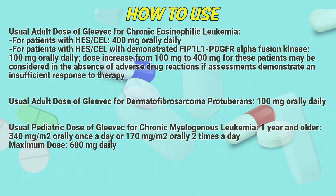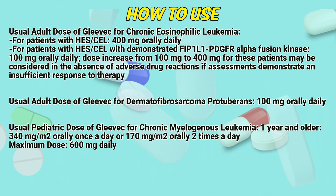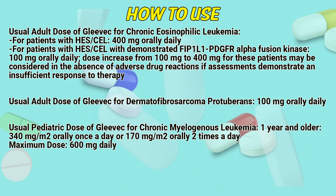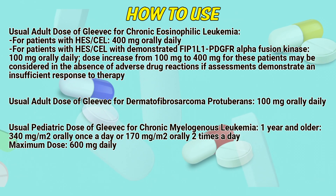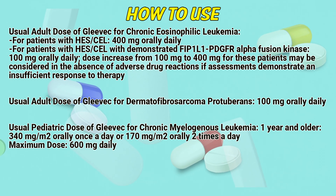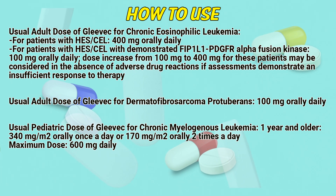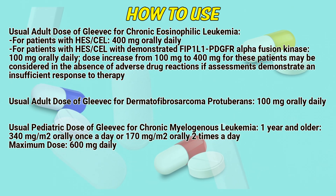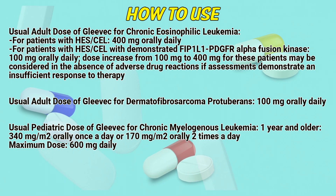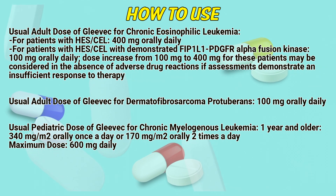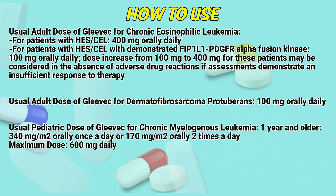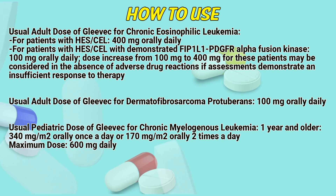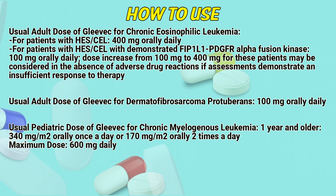Usual adult dose of Glivik for chronic eosinophilic leukemia: For patients with HES — 400mg orally daily. For patients with HES with demonstrated alpha fusion kinase — 100mg orally daily. Dose increase from 100mg to 400mg may be considered in the absence of adverse drug reactions if assessments demonstrate an insufficient response to therapy. Usual adult dose for dermatofibrosarcoma protuberans: 800mg orally daily.